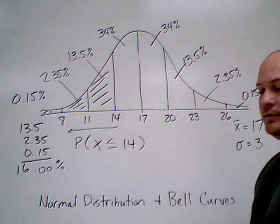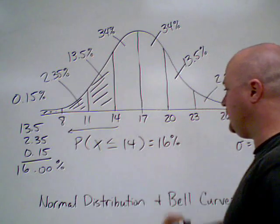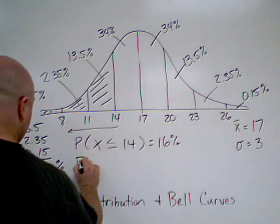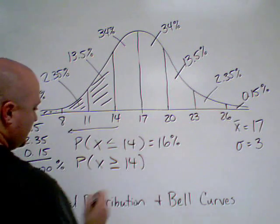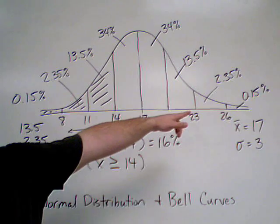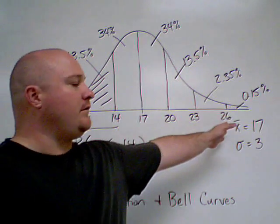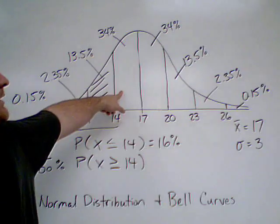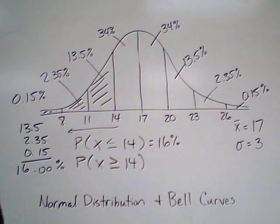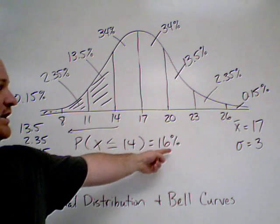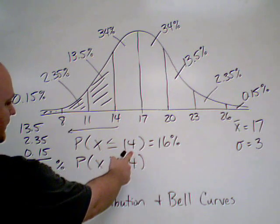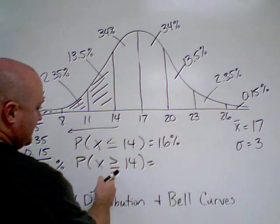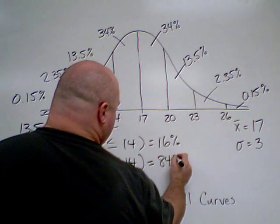What if I change it around? If I wanted the probability that the monkey is greater than or equal to 14 pounds — well, from the mean over is 50%, and the extra area between 14 and the mean is 34%, giving a total of 84%. Or I could just take 100% and subtract the 16% I had before. So if it's less than or equal to 14 at 16%, then greater than or equal to 14 has to be 84%.